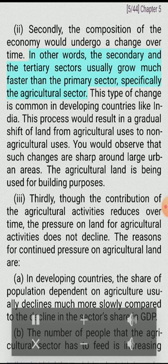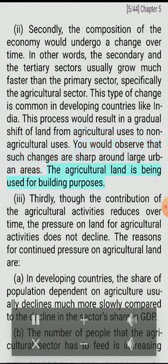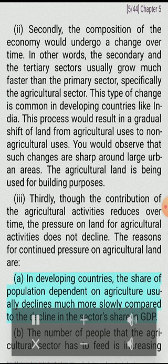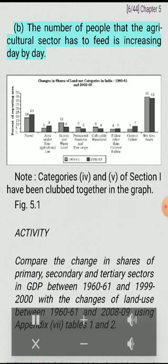Secondly, the composition of the economy would undergo a change over time. The secondary and the tertiary sectors usually grow much faster than the primary sector, specifically the agricultural sector. This type of change is common in developing countries like India. This process would result in a gradual shift of land from agricultural uses to non-agricultural uses. Such changes are sharp around large urban areas, where agricultural land is being used for building purposes. Thirdly, though the contribution of agricultural activities reduces over time, the pressure on land for agricultural activities does not decline. The reasons are: in developing countries, the share of population dependent on agriculture usually declines much more slowly compared to the decline in the sector's share in GDP, and the number of people that the agricultural sector has to feed is increasing day by day.